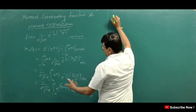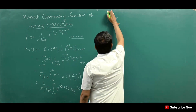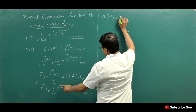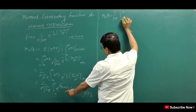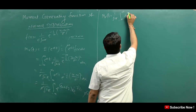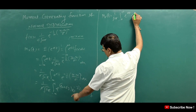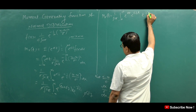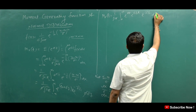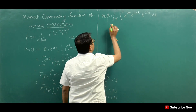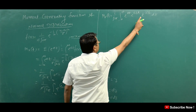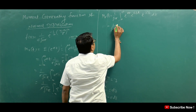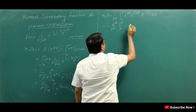We write M_X(t) as 1 upon root 2 pi times the integral from minus infinity to infinity of e to the power mu t, times e to the power sigma zt, times e to the power minus z squared by 2, dz. Since e to the power mu t is constant with respect to z, we factor it outside the integral.